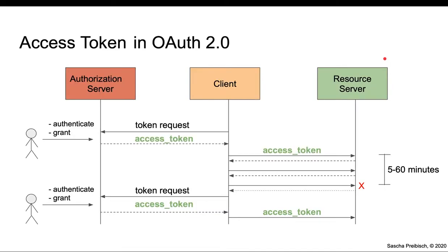First of all, let's have a look at Access Token. There's a client, and this client will send a token request. The user gets involved, authenticates and grants this request, and the authorization server will issue an Access Token. The client can now use this Access Token against a protected resource at a resource server, and can use this token as often as it likes until the token expires. This is often a lifetime of 5 to 60 minutes.